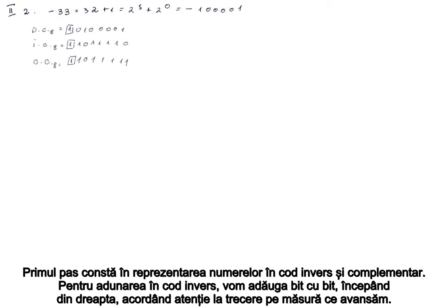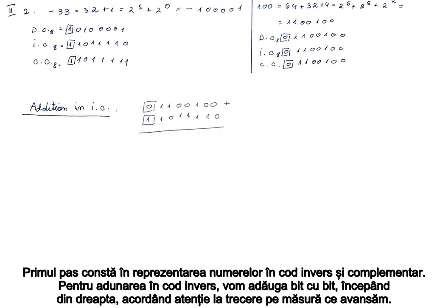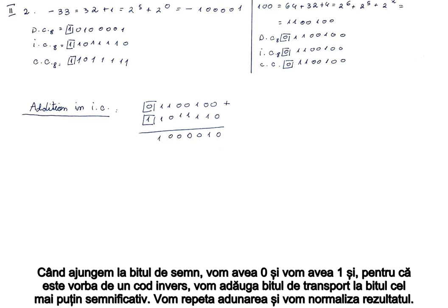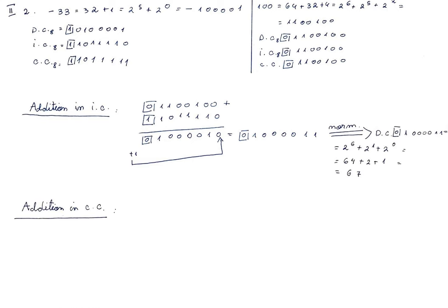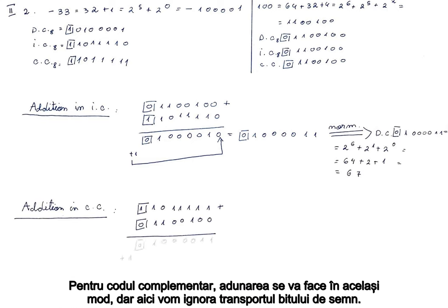The first step is to represent the numbers in inverse and complementary code. For addition in inverse code, we're just going to add bit by bit starting from the right, paying attention to the carry as we move on. When we reach the sign bit, we will have 0 and carry 1, and because this is inverse code, we will just add the carry to the least significant bit. We're going to repeat the addition and normalize the result. For complementary code, the addition will be done in the same manner, but we're going to ignore the carry of the sign bit.